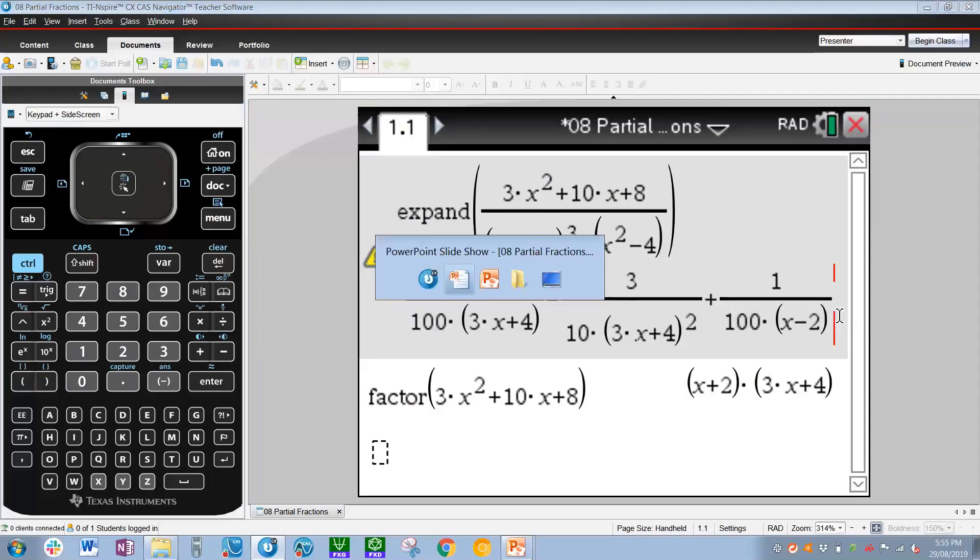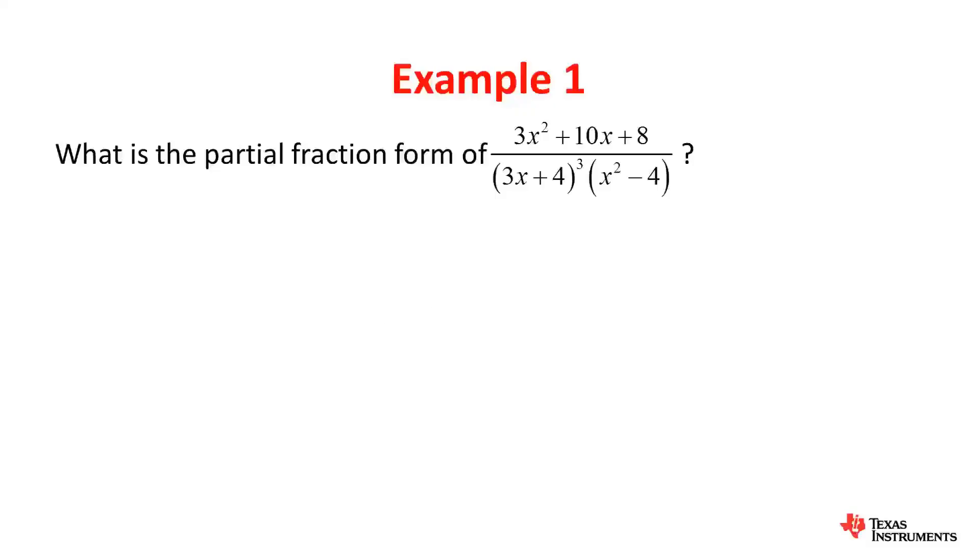Therefore, heading back, our answer is A over x minus 2, plus B over 3x plus 4, plus C over 3x plus 4 squared. This typically ends up as a multiple choice sort of question, so to really analyze it properly, it's always a good idea to factorize the top and the bottom in these cases.